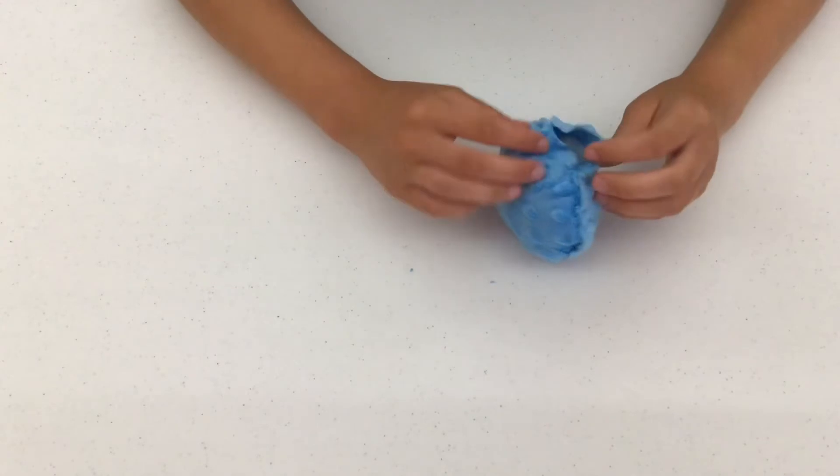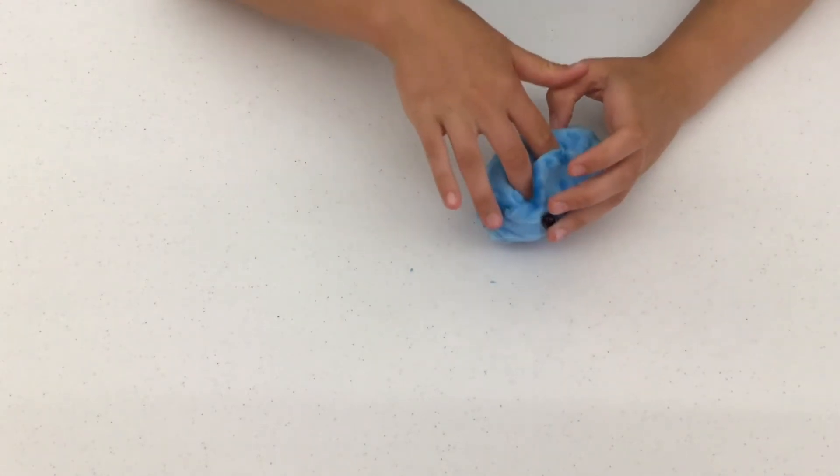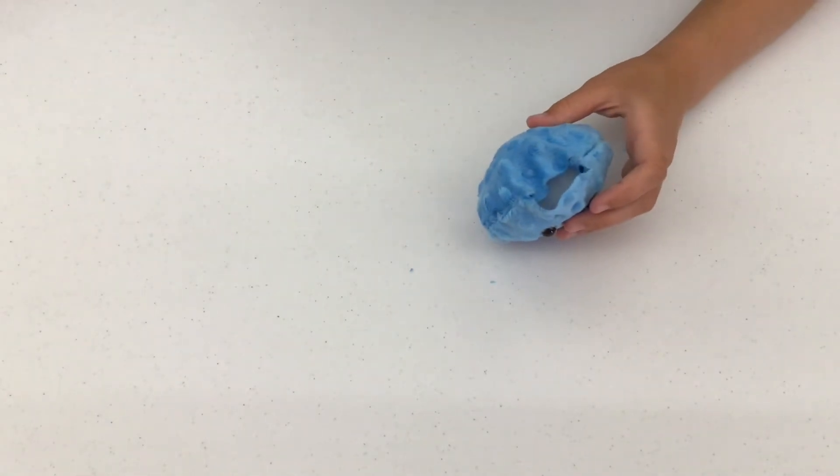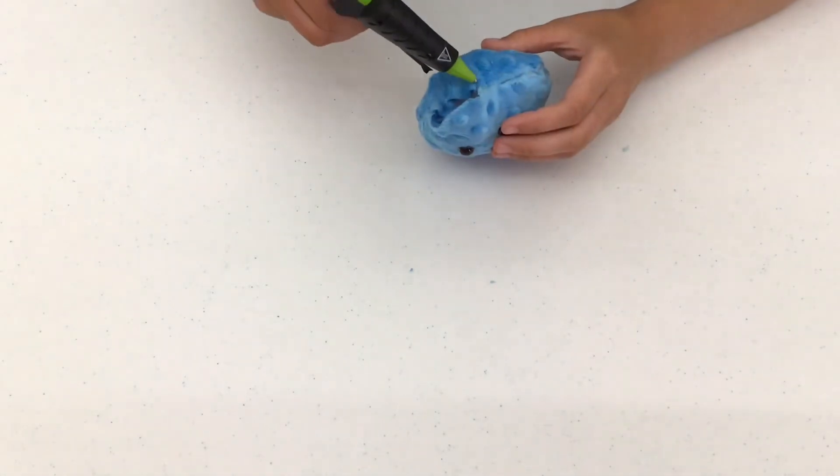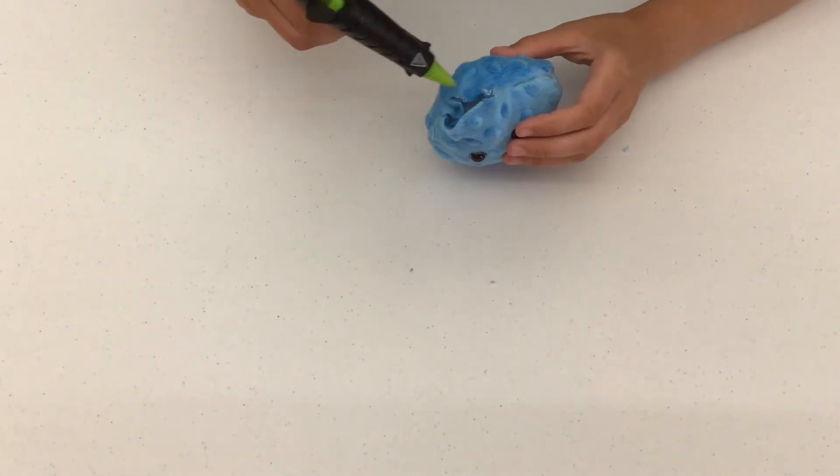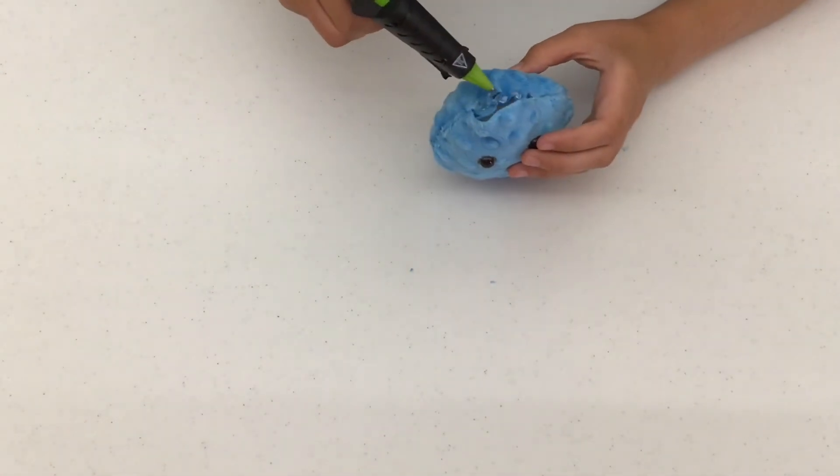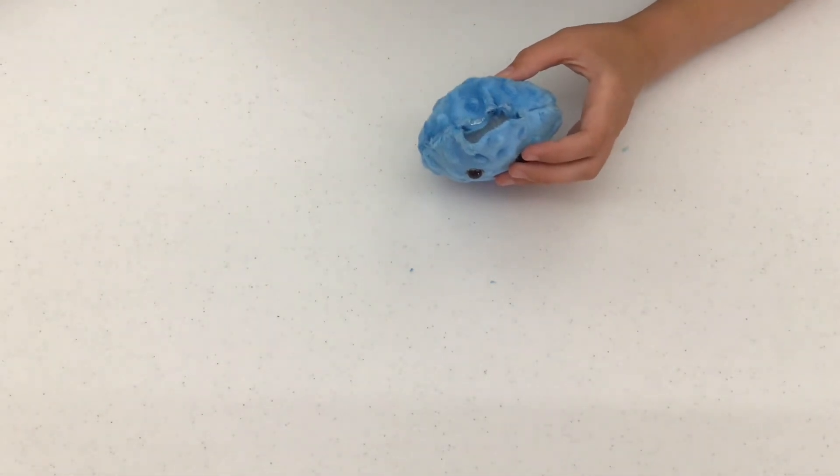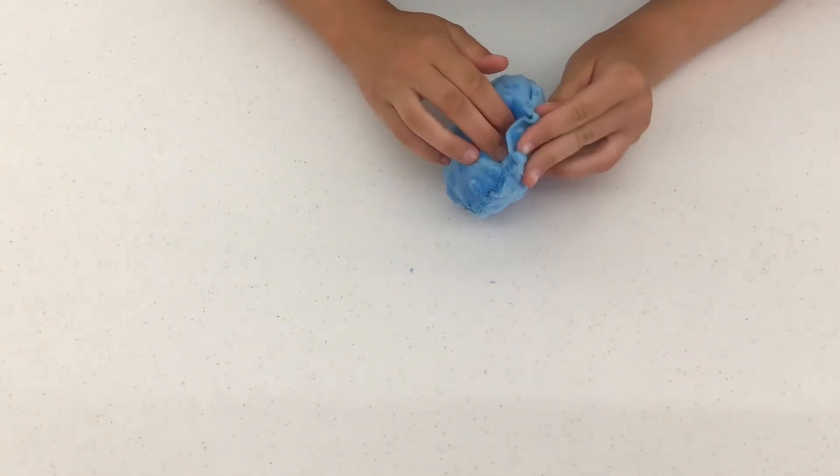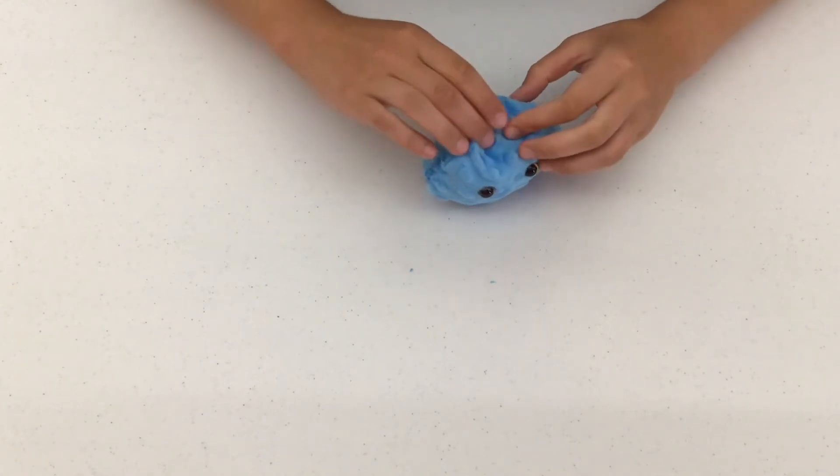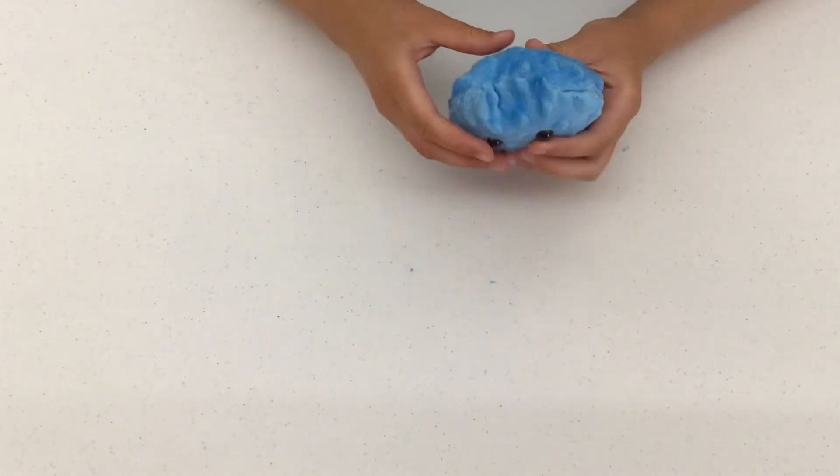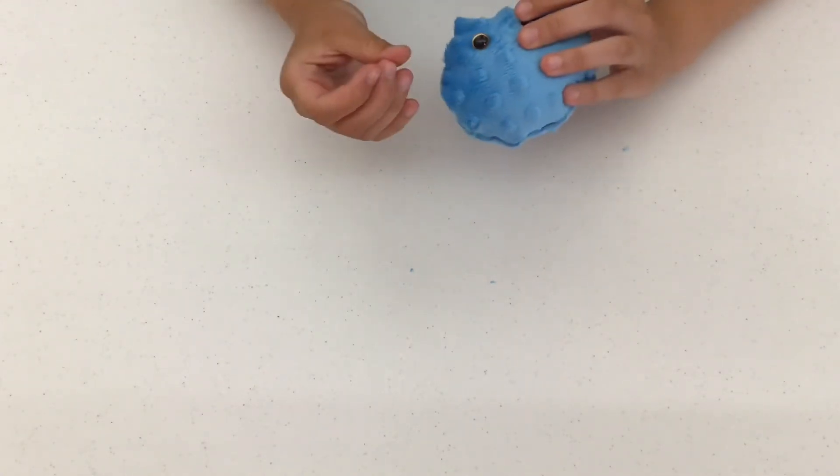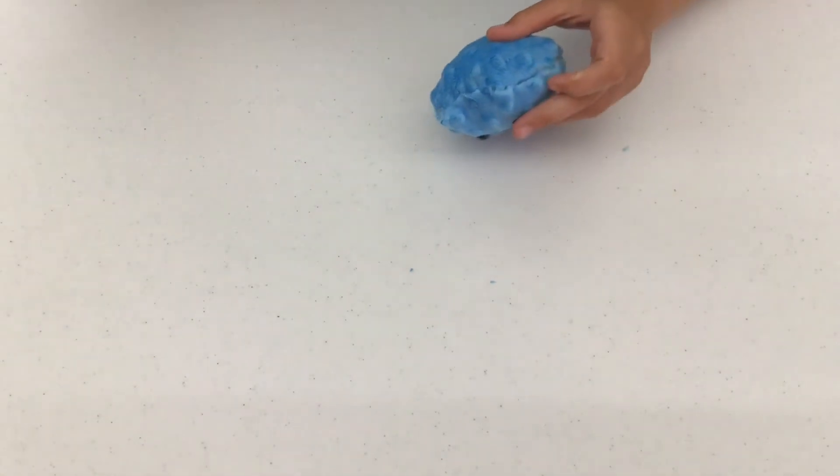Once you've got your Worry Pet stuffed, it's time to glue the last flap. Fold one side over and the other on top of it. That's going to be where you glue. Glue it on any weird little flaps and your Worry Pet is done.